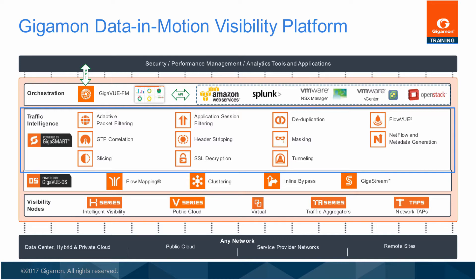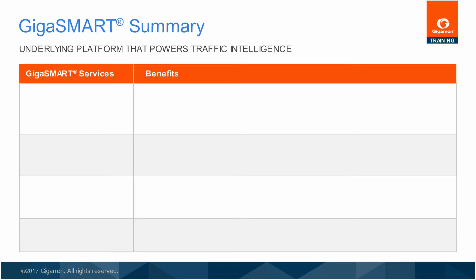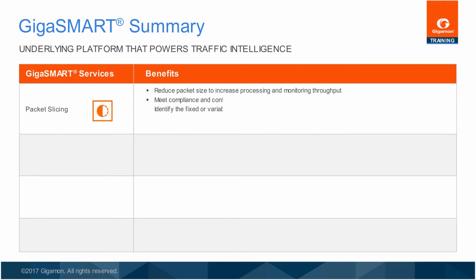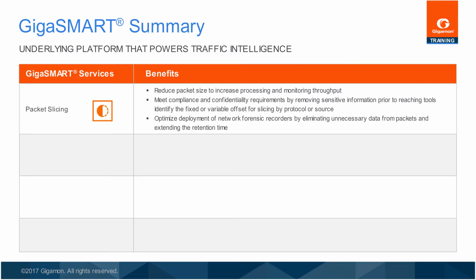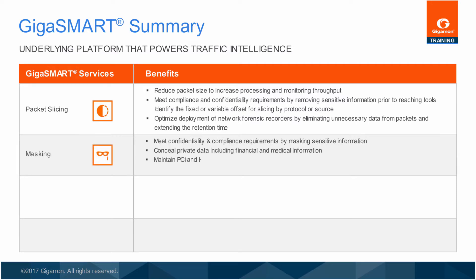Now let's take a closer look at these features. This table and the following tables list the benefits of each GigaSmart application. Packet Slicing reduces packet size to increase processing and monitoring throughput. This feature can greatly aid confidentiality compliance efforts and also optimizes the deployment of forensic recorder tools. Masking conceals private data within the packet by overriding selected portions of a packet as it is forwarded — examples include financial and medical information — empowering network monitoring and security tools while hiding sensitive information and maintaining compliance with PCI and other confidentiality requirements.